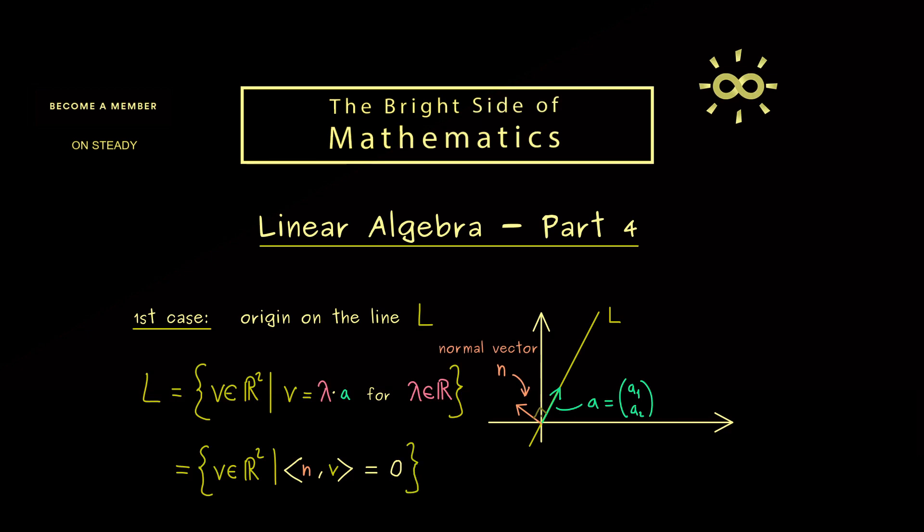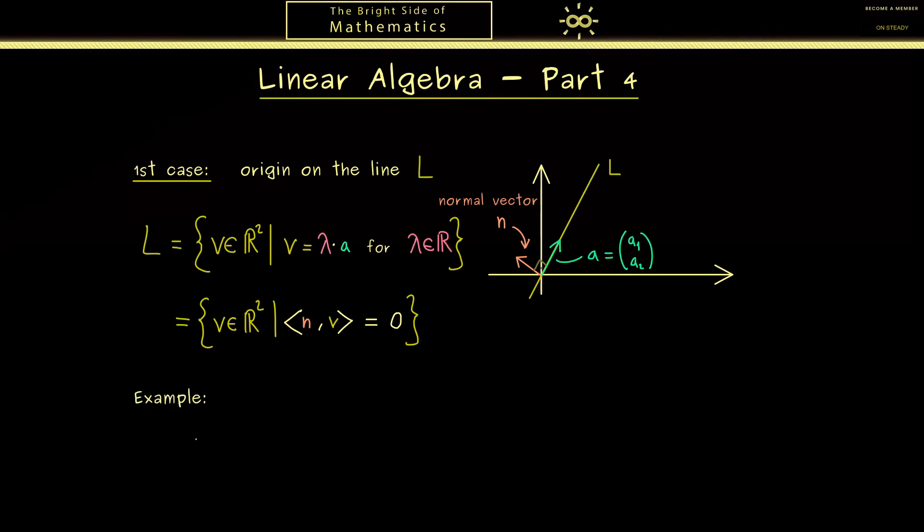Ok, there it might be helpful to look at an example. So we just take a normal vector N and then we define the line L. For example, let's take this vector here which should be 3, -1. Hence then the line L should look like this.